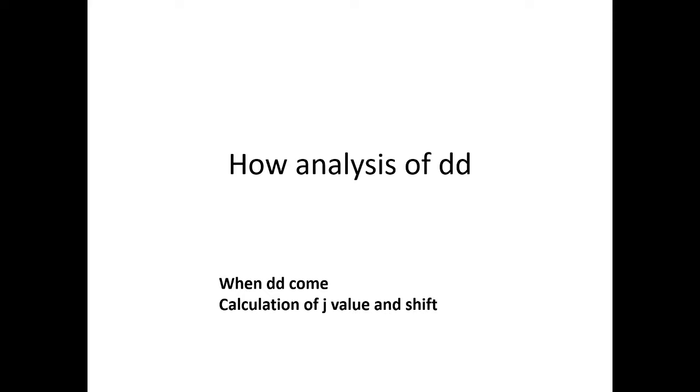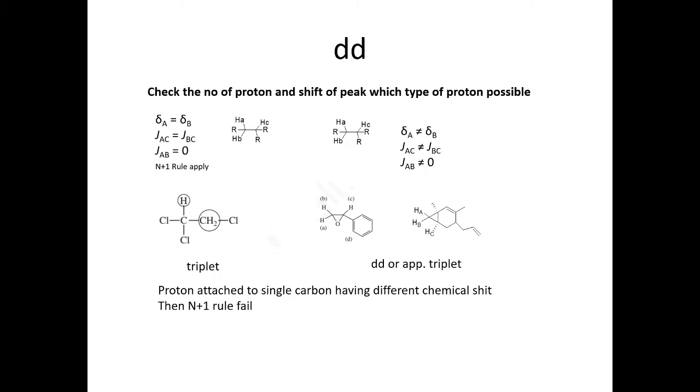In this lesson I will show you how to analyze the doublet of doublet NMR peak. The first question is: is it a triplet or a doublet of doublet or apparent triplet? If you see this proton, assume this is HA and HB has the same chemical shift. Then it's coupled to this proton, giving you a triplet. So the n+1 rule is followed in this first example.